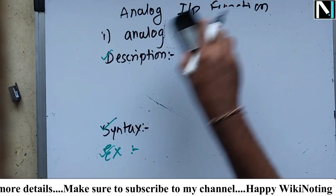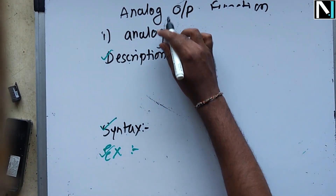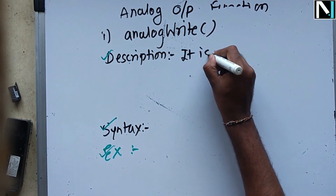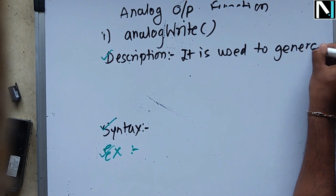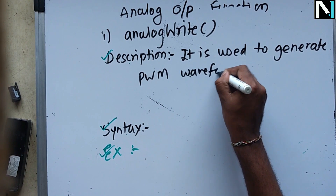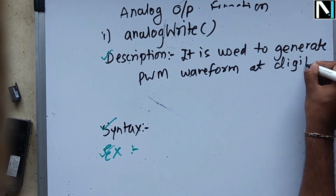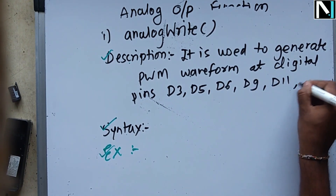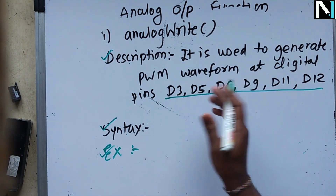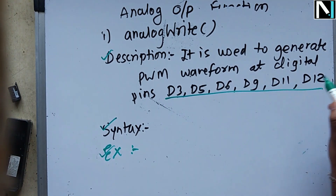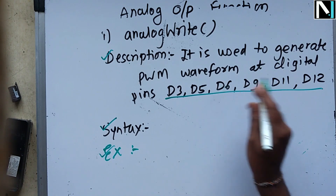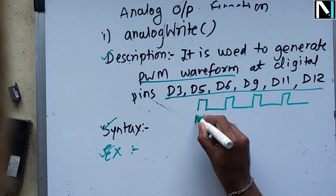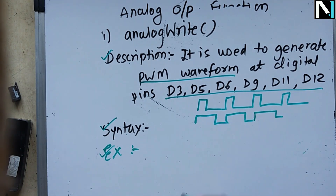Now for the analog output function. There is one function: analogWrite. It is used to generate a PWM waveform at digital pins D3, D5, D6, D9, D11, and D12. These specific digital pins on Arduino can produce pulse-width modulated waveforms, which are used to control things like the speed of a DC motor at various duty cycles such as 25%, 50%, or 75%.